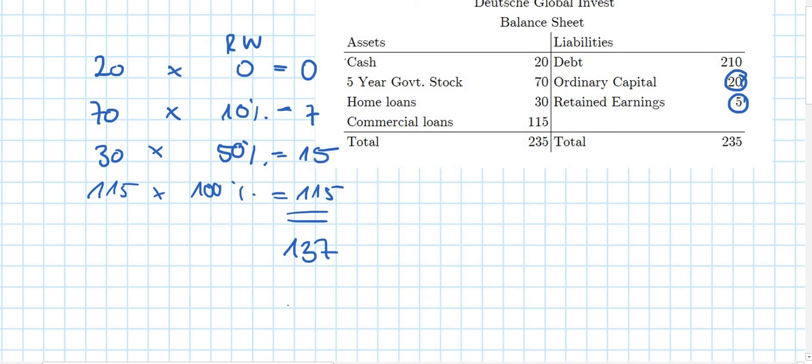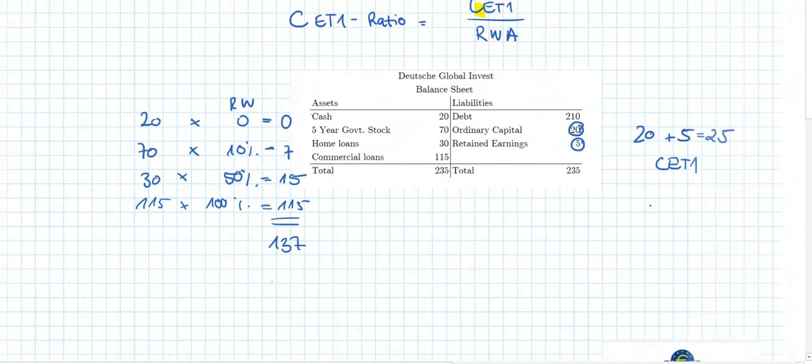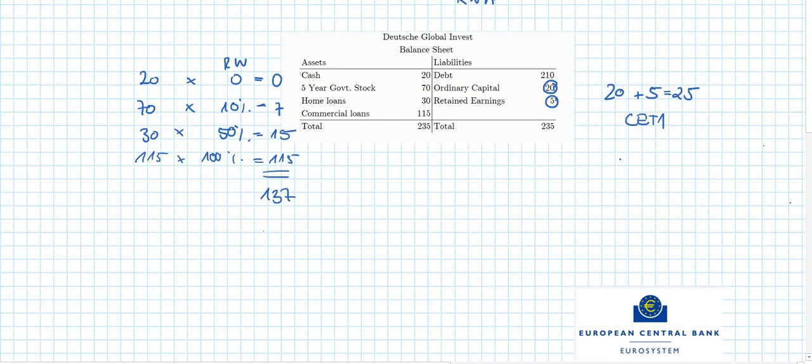And now you probably already see how the CET1 ratio is calculated. We have our CET1, which is 25. We have our risk-weighted assets, which is 137. And the ratio is, in our example, 18.24%.